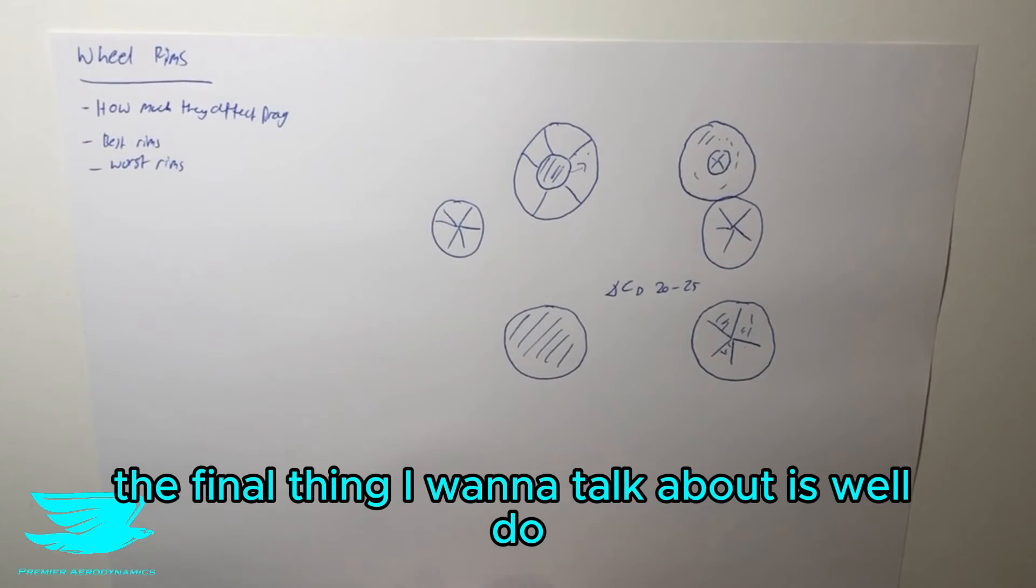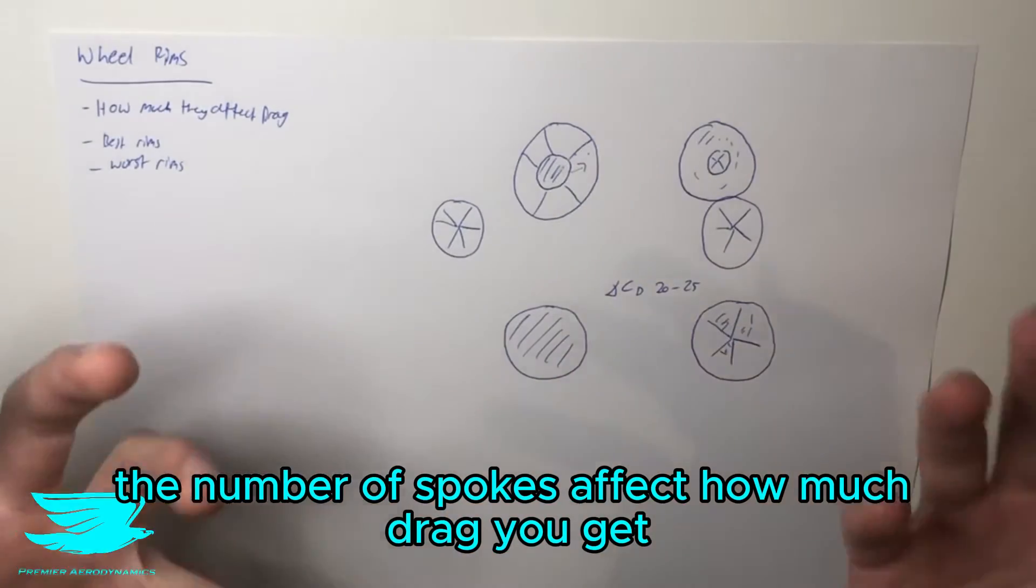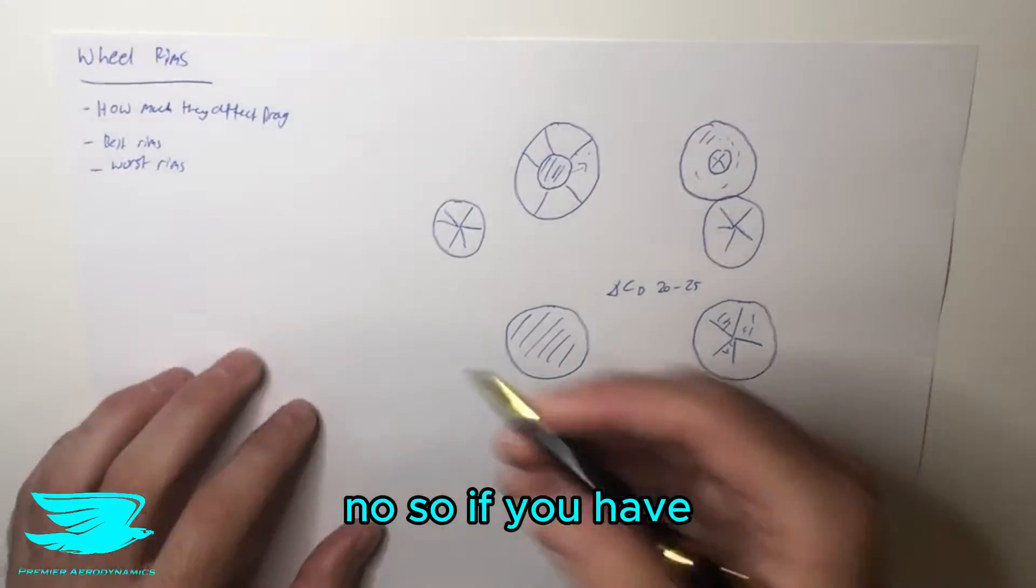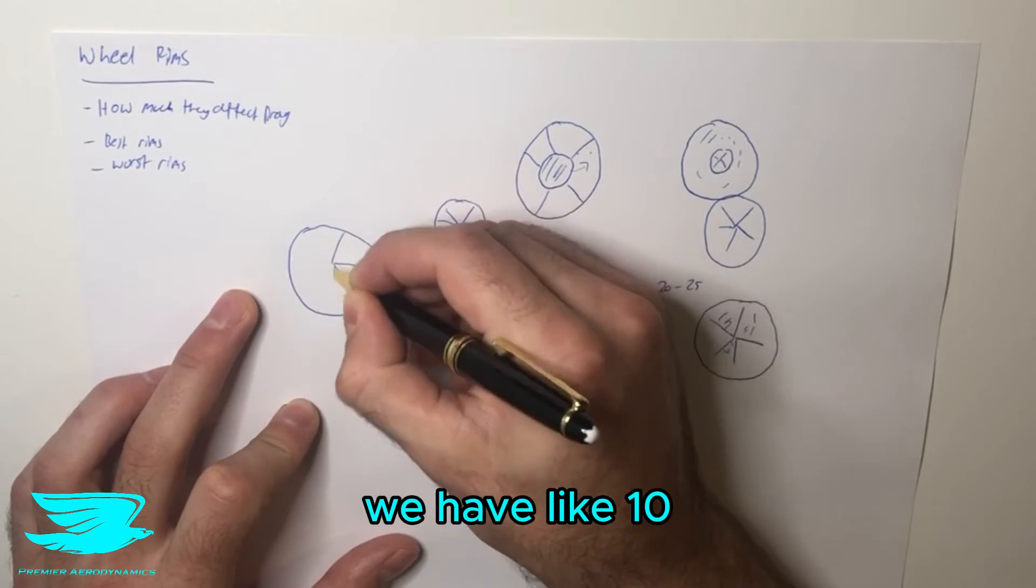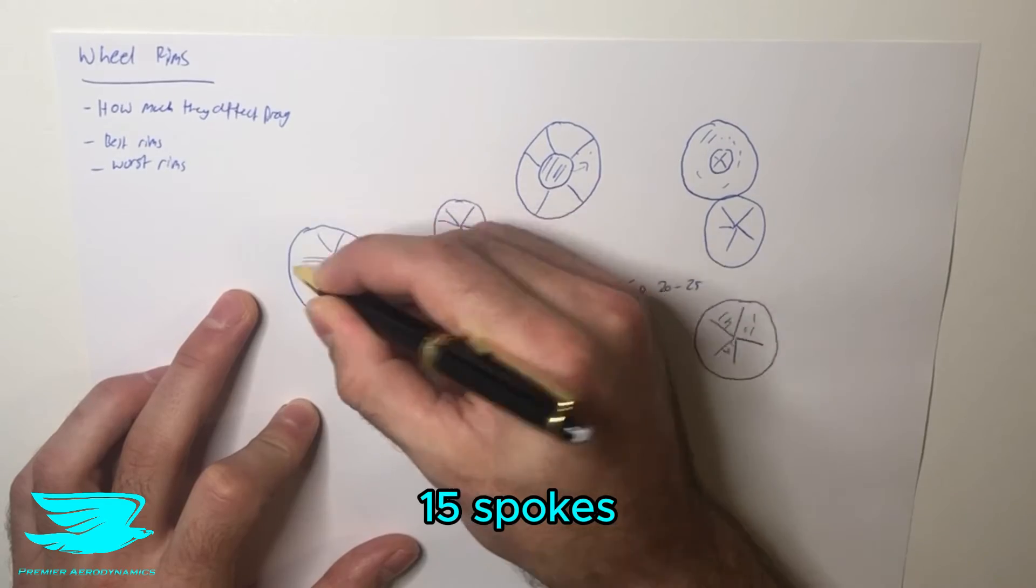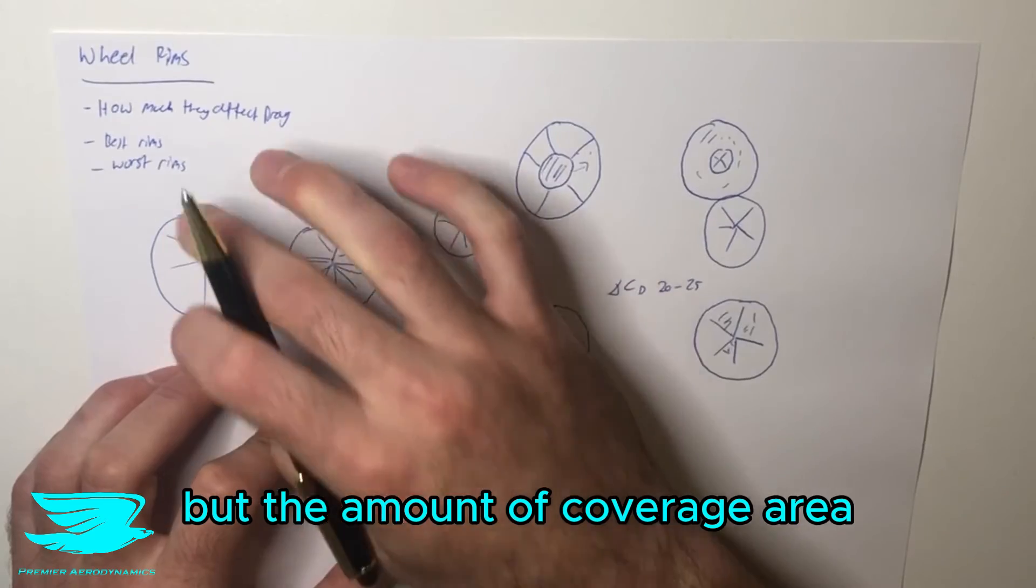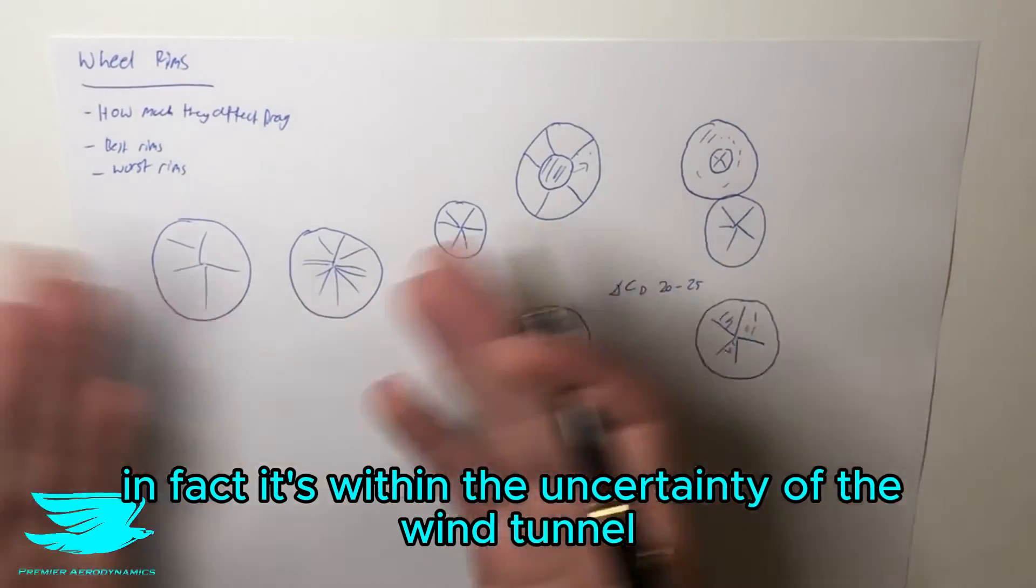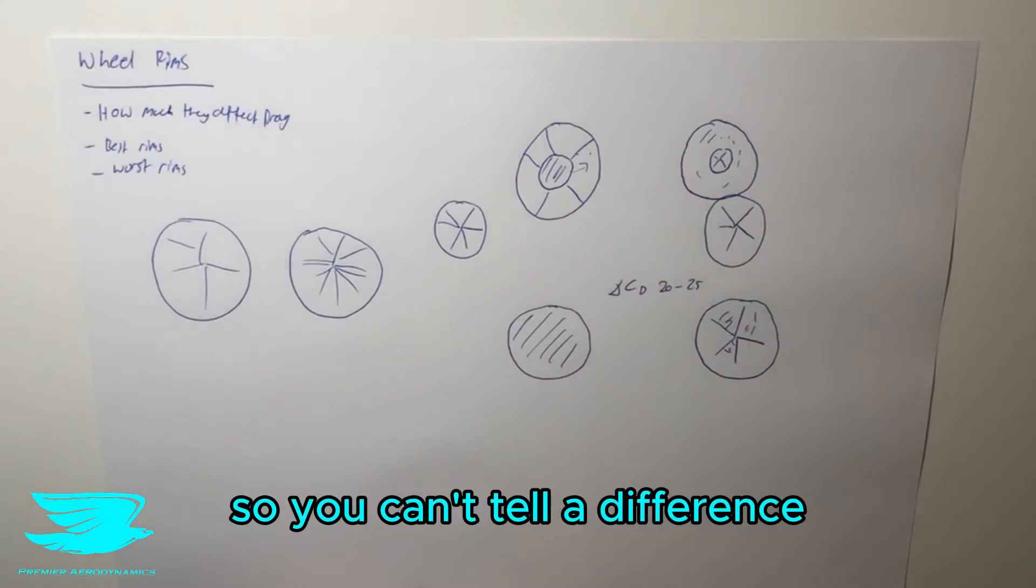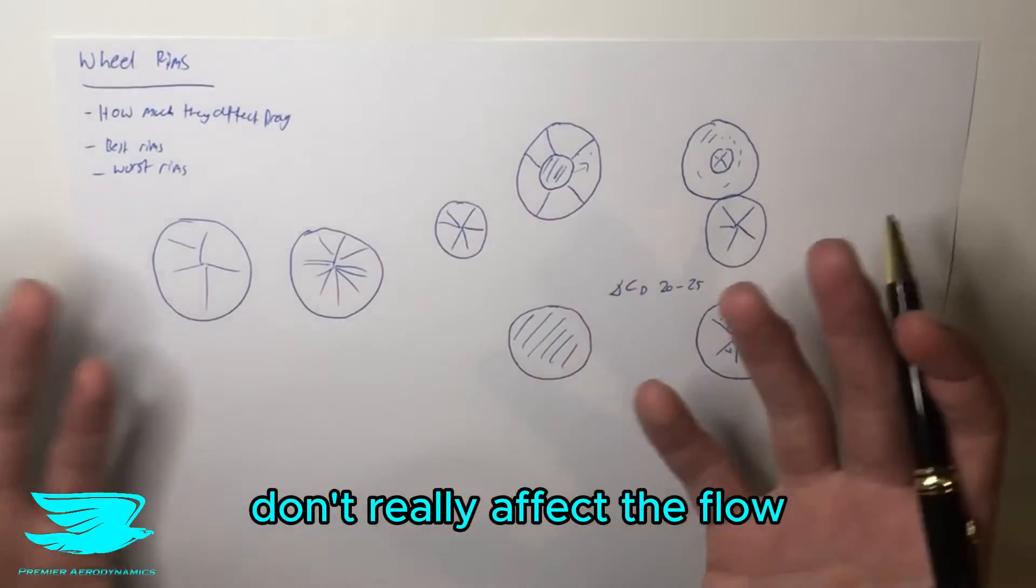The final thing I want to talk about is whether the number of spokes affects how much drag you get. Well, generally speaking, no. So if you have one rim design with 10 or 15 spokes, and another rim design with only five, but the amount of coverage area is exactly the same, the drag will pretty much be completely the same. In fact, it's within the error of the wind tunnel, so you can't actually tell the difference.